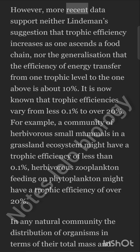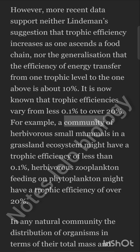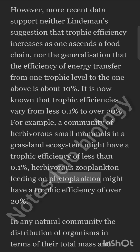However, more recent data support neither Lindemann's suggestion that trophic efficiency increases as one ascends a food chain, nor the generalization that the efficiency of energy transfer from one trophic level to the one above is about 10%. It is now known that trophic efficiencies vary from less than 0.1% to over 20%. For example, a community of herbivorous small mammals in a grassland ecosystem might have a trophic efficiency of less than 0.1%, while herbivorous zooplankton feeding on phytoplankton might have a trophic efficiency of over 20%.